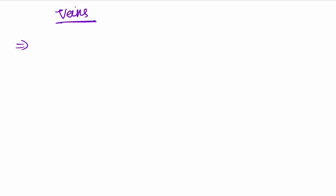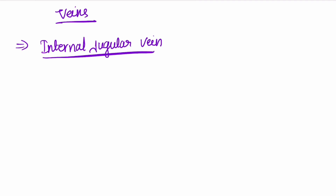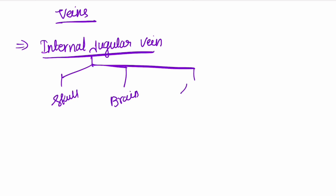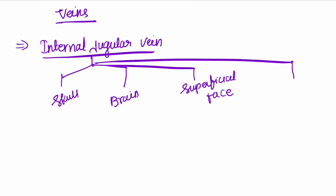Now let us discuss about the veins in the anterior triangle. The major vein here is the internal jugular vein, which drains from the skull, the brain, the superficial face, and some parts of the neck.